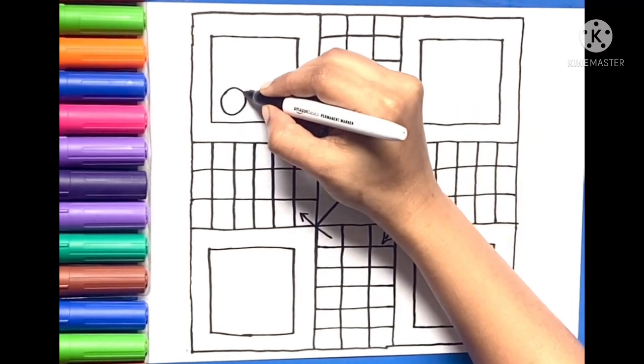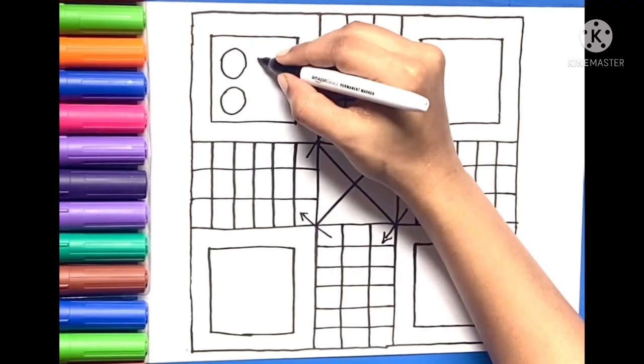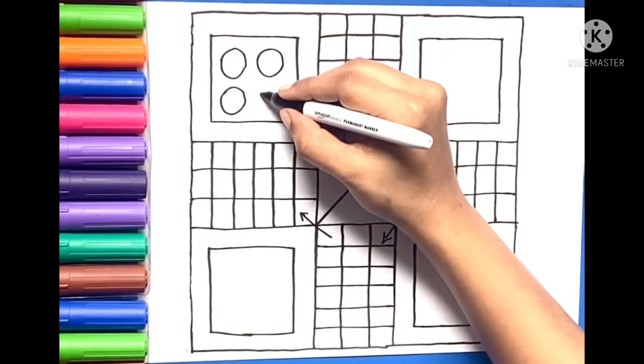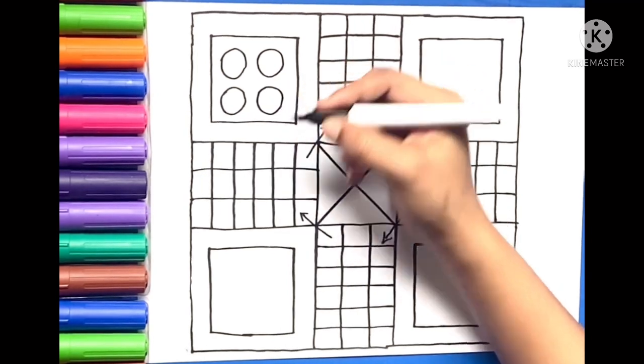Draw four small circles on first square box, two on top and two on bottom, on all four square boxes.